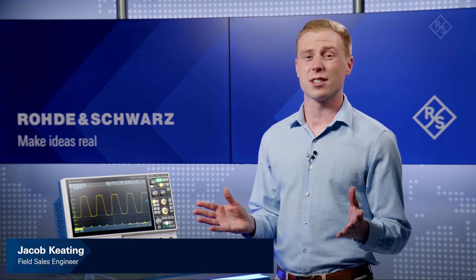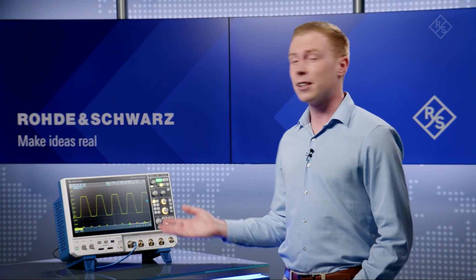Have you found your current scope simply won't trigger on really small signals? The Rohde & Schwarz MXO4 series oscilloscope can trigger on signals as small as one one-thousandth of a vertical division, thanks to digital triggering. Let's take a look.